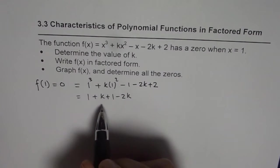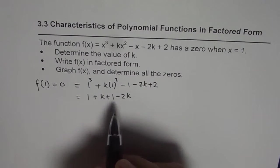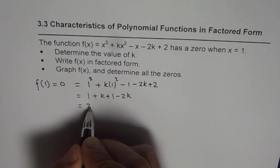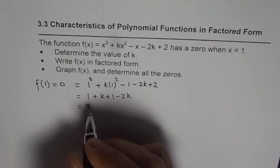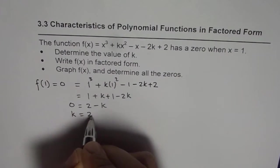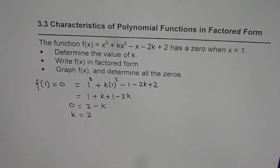Now that gives us the value of k as what? 1 plus 1 is 2, k minus 2k is minus k. This is equal to 0, or we can say k equals 2. So we have found the value of k.